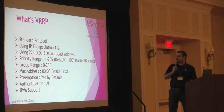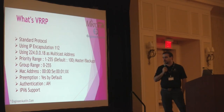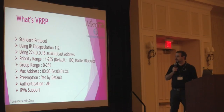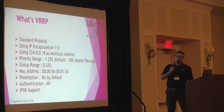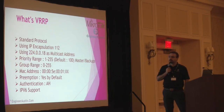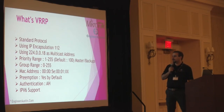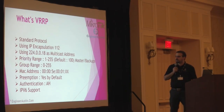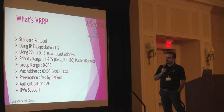Now let's move on to VRRP. VRRP is a standard protocol using IP encapsulation protocol number 112, and the multicast address 224.0.0.18. The priority range used to choose the master or backup router is 1 to 255. We have a group range defining how many VRRP instances we can have. It has a specific virtual MAC address, preemption is active by default in RouterOS, and it supports authentication header and IPv6.